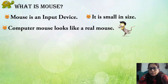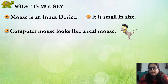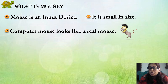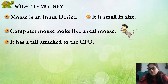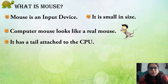A computer mouse looks like a real mouse, but it is not a real mouse. It is a device used with a computer. It has a tail — a wire — attached to the CPU of the computer, which looks like a tail.